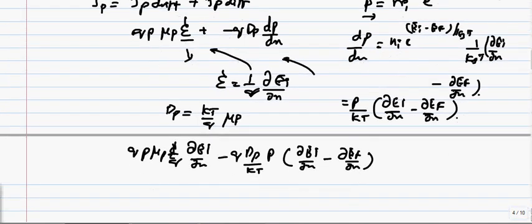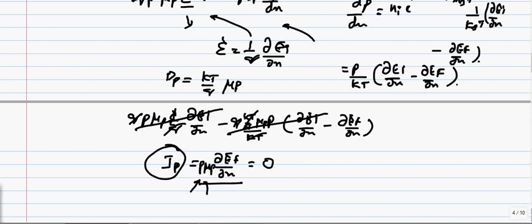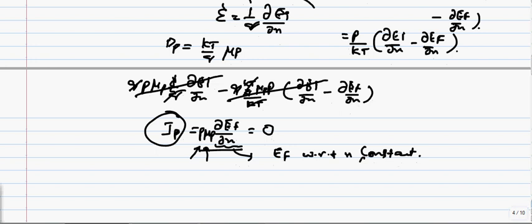Substituting D_P with KT over Q times mu_P, the KT over Q terms cancel, the Q terms cancel, and this equation results in JP equals P times mu_P times ∂EF/∂X. We know that under equilibrium JP equals zero. Since P and mu_P are finite and not zero, the only term that should be zero is ∂EF/∂X. Therefore we can conclude that EF should be constant with respect to X, meaning dEF by dX equals zero.